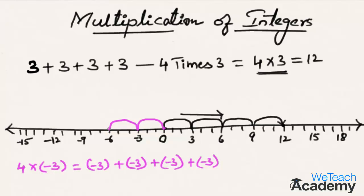Starting from 0, taking 4 jumps each of 3 steps towards the left, we reach at minus 12. So 4 multiplied with minus 3 is minus 12.